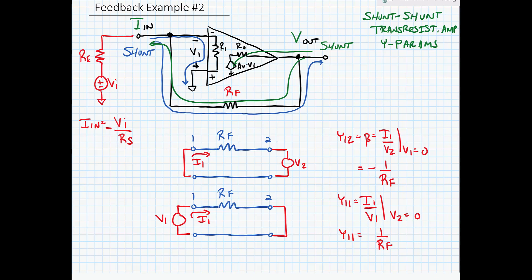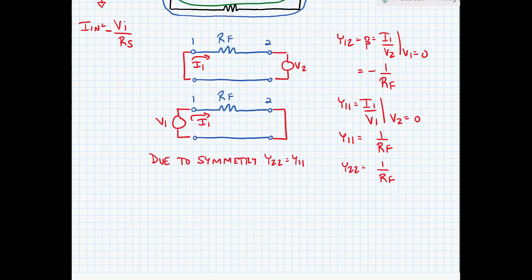Now at this point we note that the network is symmetric. In other words, it looks the same when I look into port one or port two and from that symmetry I can say that Y22 must be equal to Y11. In other words, I can say that Y22 is equal to one divided by RF.